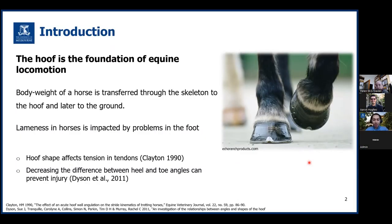An introduction about my project. The hoof is a part of a horse's body that has an essential role in equine locomotion. The hoof withstands the forces generated during weight bearing, and more importantly, through the impact of the hoof hitting the ground when a horse with approximately 500 kilogram weight is trotting or galloping. Lameness in horses is mainly impacted by the problems in the foot and particularly hoof shape.